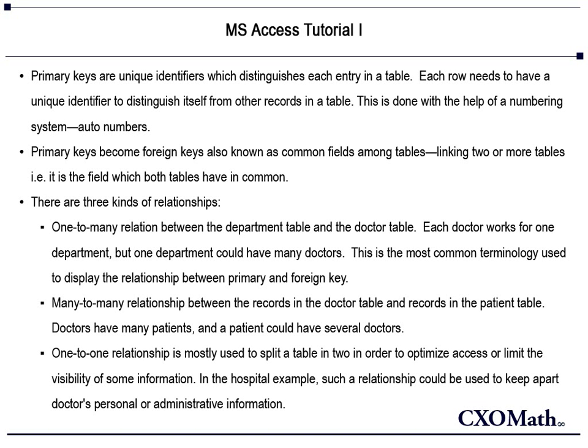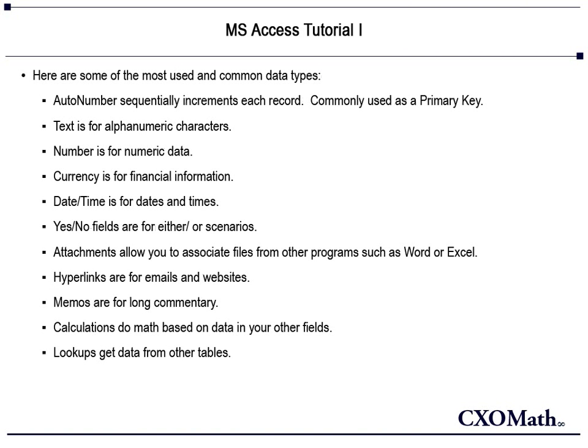Every field needs a data type so that Access knows how to manage it. Here are some of the most common data types. Auto-number sequentially increments each record and is commonly used as a primary key. Text is for alphanumeric characters. Number is for numeric data. Currency is for financial information. Date and time is used for dates and times in a table.